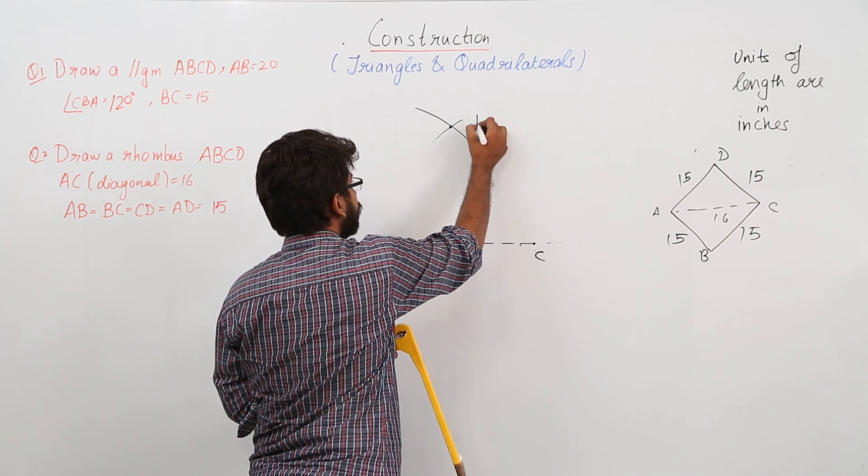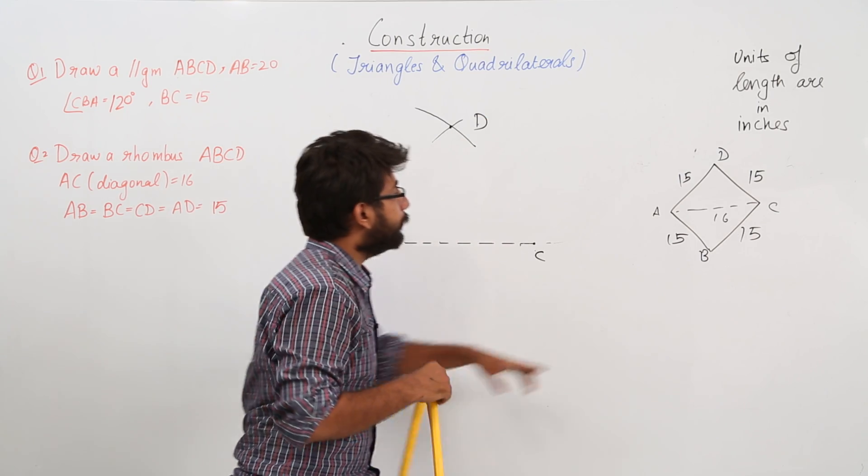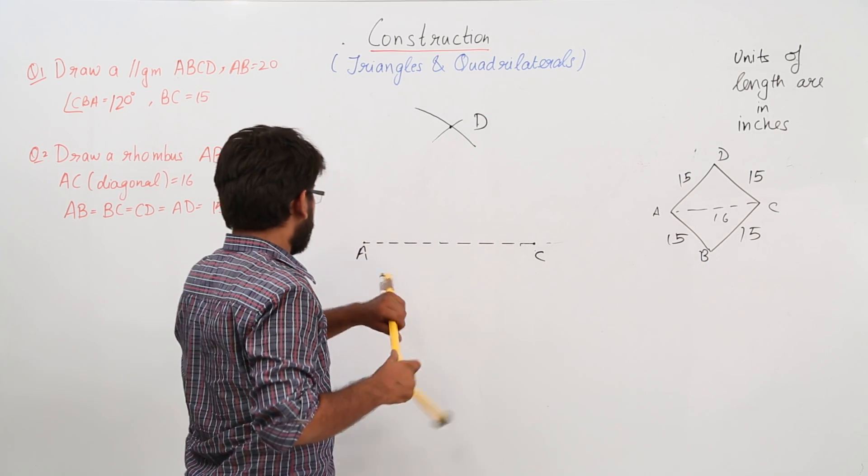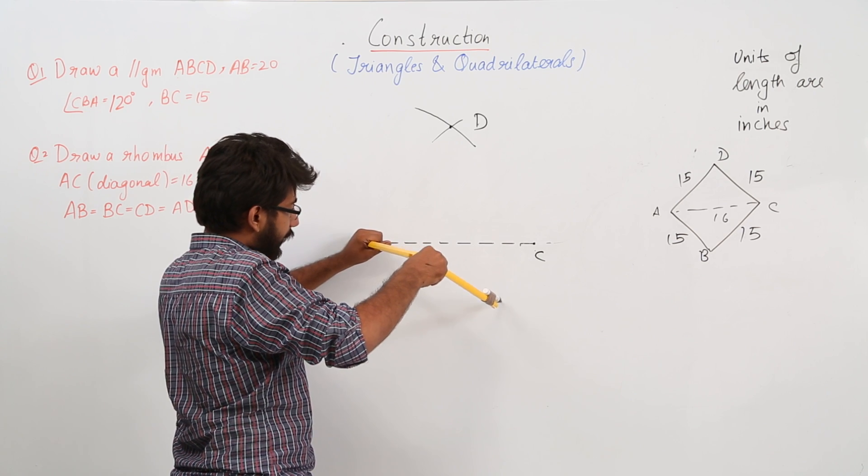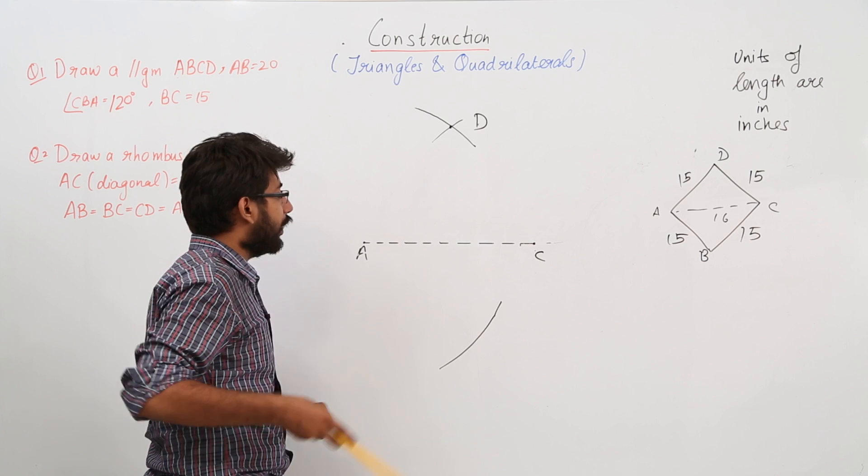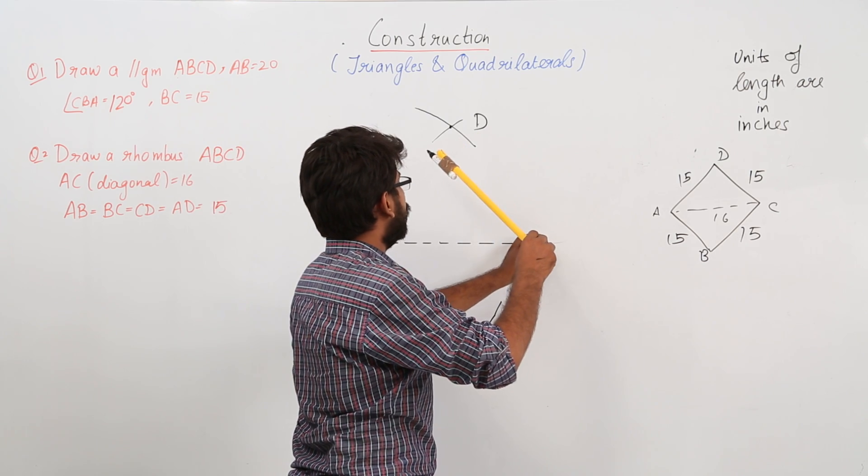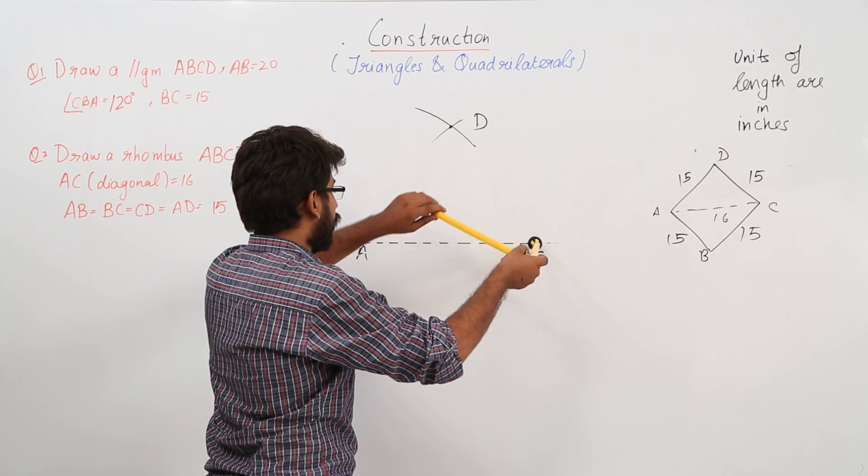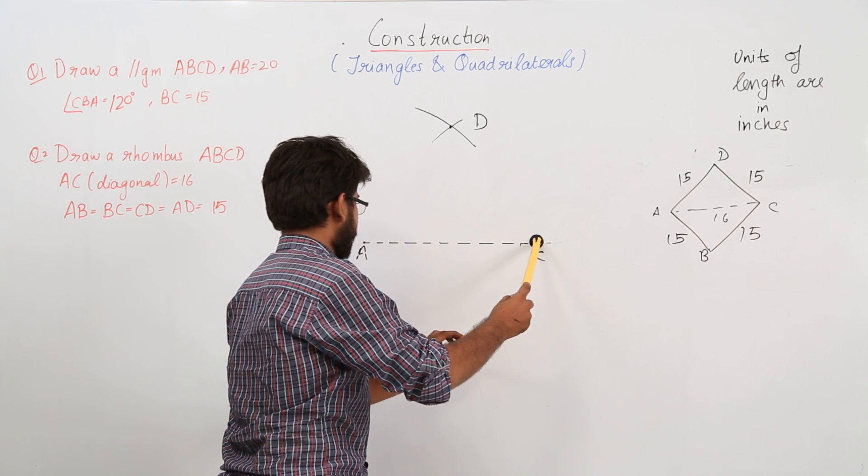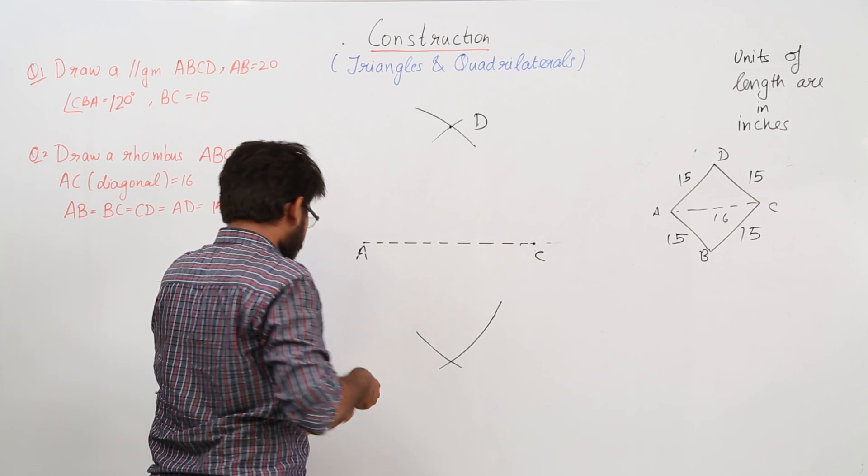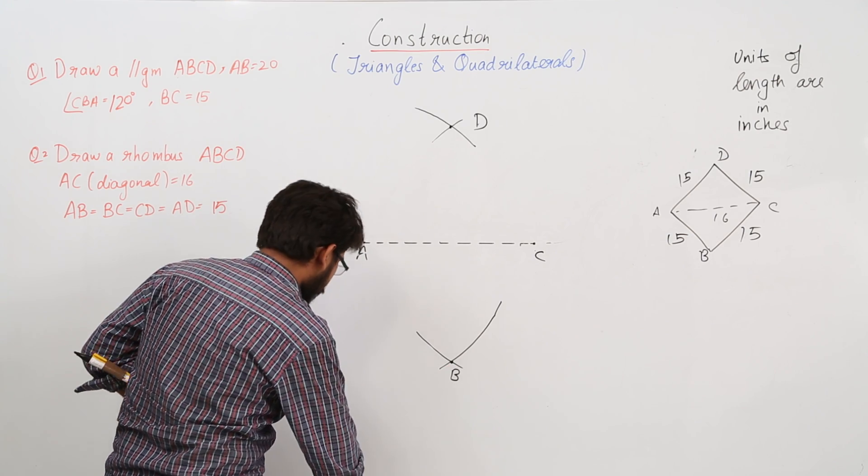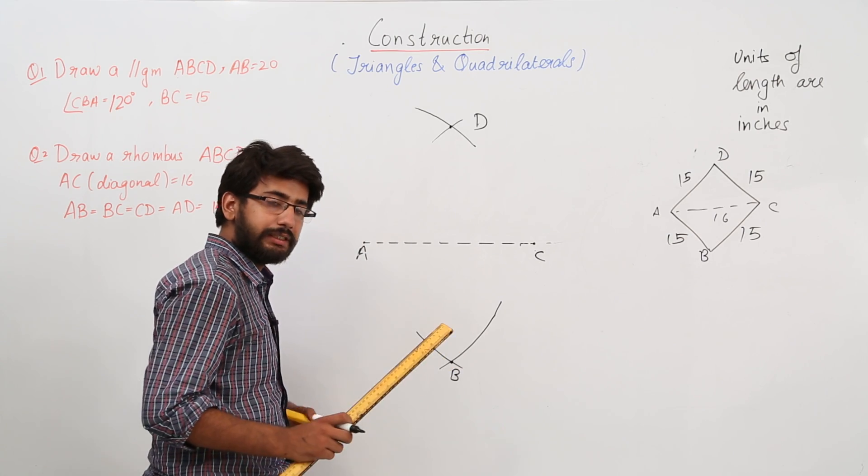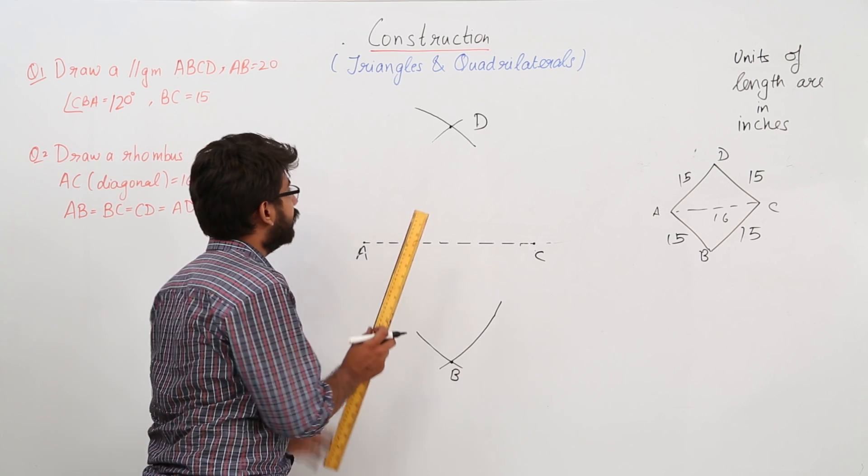Now we know similarly we will find out the point B. Keep your compass, the pointed end of your compass over here, and draw an arc. Keep the pointed end of the compass on C and draw this. Now you have a point B. This is point B, this is point D. Now we know all the four vertices.